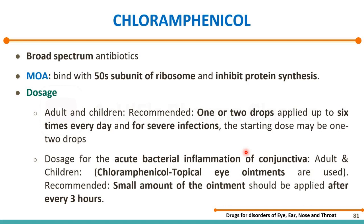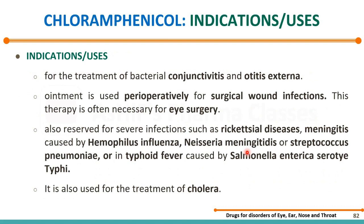Coming to uses: chloramphenicol eye ointment or drops are mainly used for treatment of conjunctivitis as well as otitis externa. This ointment is also used perioperatively for surgical wound infection, including eye surgery. Off-label uses include rickettsial disease, meningitis caused by Haemophilus influenzae, Neisseria meningitidis, Streptococcus pneumoniae, typhoid fever caused by Salmonella.